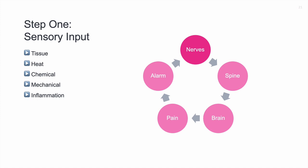Step one is sensory input. Picture nerve endings coming in different varieties. We have nerve endings that detect tissue damage — a cut, stretched tendon, snapped ligament. Heat. Chemical — if you've had lemon juice in a small cut, there's a chemical acid sensor telling the brain that open cuts shouldn't have acid. Mechanical pressure — think of a spinal disc protruding and pressing against a nearby nerve. And inflammation. Five different types of nerve endings sending information to the spine and brain that something is wrong.